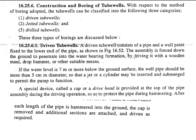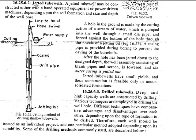If the water level is seven meters or more below the ground surface, the pipe should be more than five centimeters in diameter for safety, so that a jet or cylinder may be inserted and to permit the pump to function properly. We also use certain caps or drivers to protect the top head of the bore, because hammering down may damage the top portion of the bore.